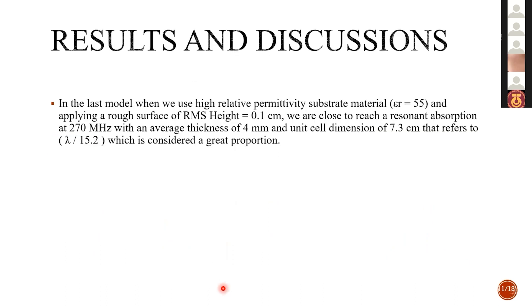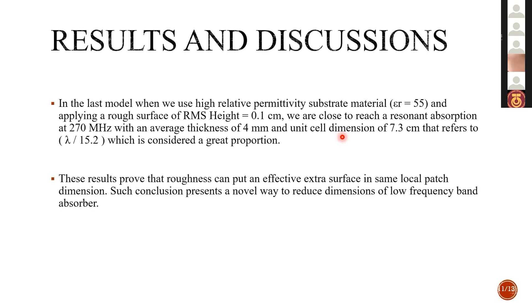As a result, in the last model, when we use high relative permittivity substrate material and applying a rough surface of RMS height equal 0.1, we are close to reach a resonant absorption at 217 to 270 megahertz with an average thickness of 7.3 centimeters that refers to lambda over 15.2, which is considering a great proportion. These results prove that roughness can put an effective extra surface in same local patch dimensions. Such conclusion presents a novel way to reduce dimension of low frequency band absorber.